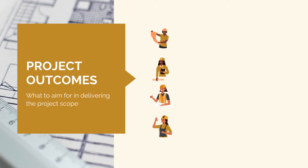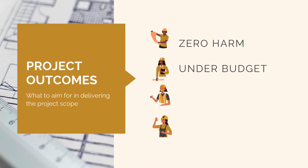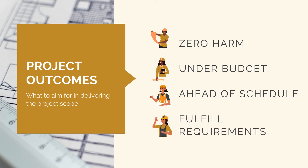We'll go into more detail about project outcomes in our next lecture, but basically, for any project, the outcomes we are aiming for are to deliver the project scope with zero harm to any workers, members of the public, or the environment, without spending too much money and remaining within our budget, complete the works within the allocated timeframe and remain ahead of schedule, and fulfill all the owner's requirements — meaning a high standard of quality.